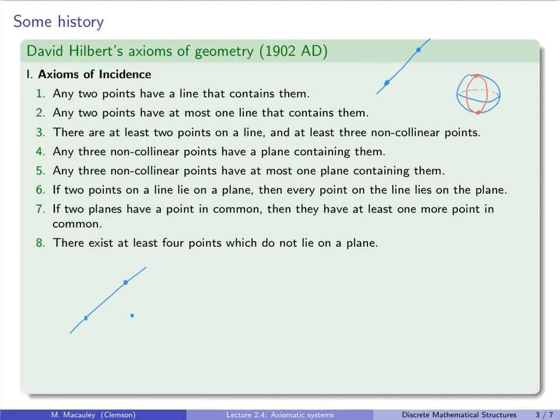Four, any three non-collinear points, that's points that do not lie on the same line, have a plane containing them. That makes sense, right? Three points determines a plane. Assuming they are not on a line, obviously if you have three points that are on a line, there might be many planes that contain them.